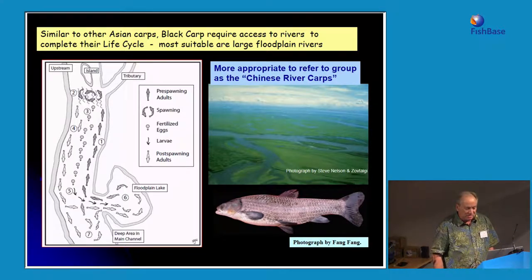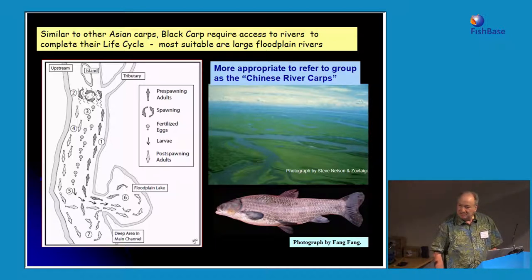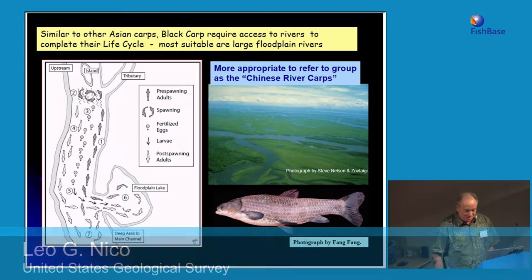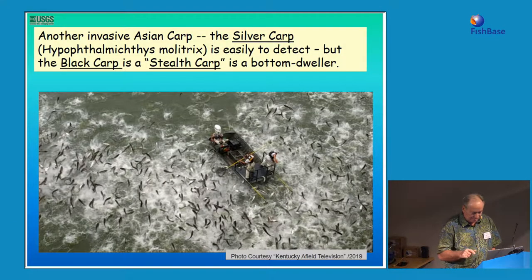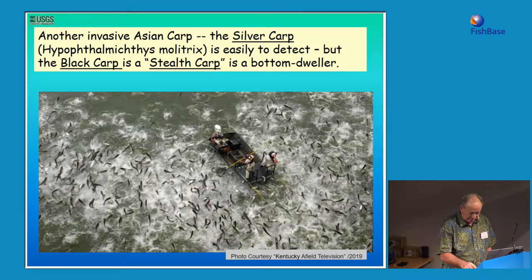Black carp require access to rivers to complete their life cycle; most suitable are large floodplain rivers, and they migrate long distances — sometimes hundreds of kilometers. In fact, places like the Mississippi River Basin are probably more suitable to black carp than the rivers in China. The silver carp in the Mississippi Basin is easy to detect because it responds to shocker boats, but the black carp is a bottom dweller, does not jump, and thus its numbers and dispersal are not easy to track — so we're probably underestimating its distribution and numbers.